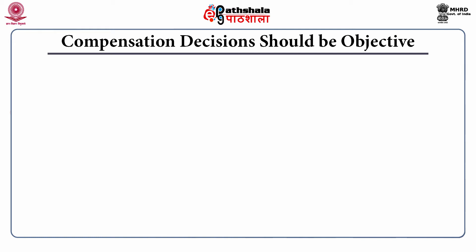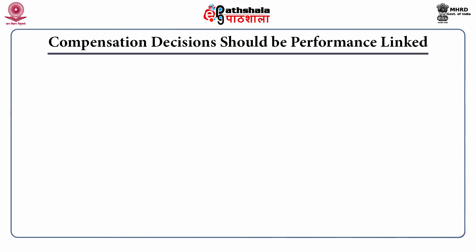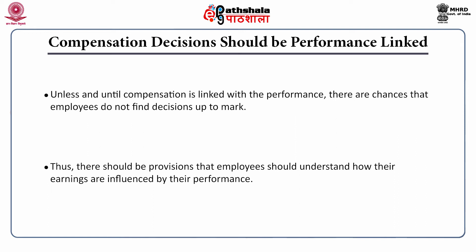Compensation decisions should be objective. The reason and logic behind setting a pay rate should be clear. Parameters that help make decisions more objective include compensable factors, contribution margin, competencies, internal and external equity, and benchmarking data. Compensation decisions should also be performance-linked. Unless compensation is linked with performance, employees may not find decisions satisfactory. There should be provisions ensuring employees understand how their earnings are influenced by their performance.